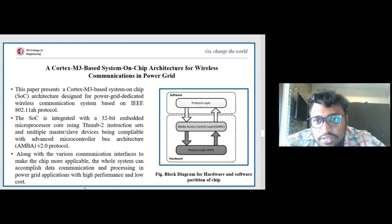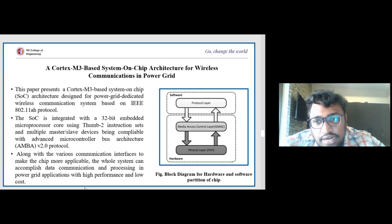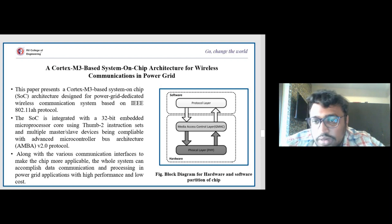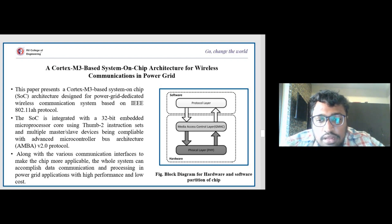The next paper presents a Cortex-M3 based system-on-chip architecture designed for power grid dedicated wireless communication system based on IEEE 802.11ah protocol. The SoC is integrated with a 32-bit embedded microprocessor core using Thumb-2 instruction sets and multiple master-slave devices compatible with Advanced Microcontroller Bus Architecture version 2.0 protocol, along with various communication interfaces. The whole system can accomplish data communication and processing in a power grid application with high performance and low cost.